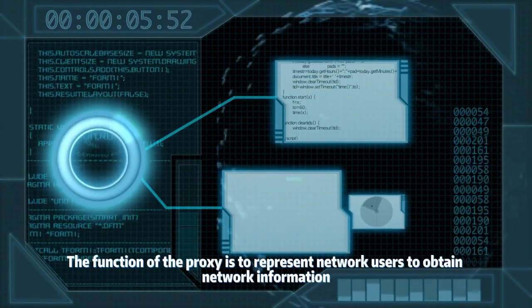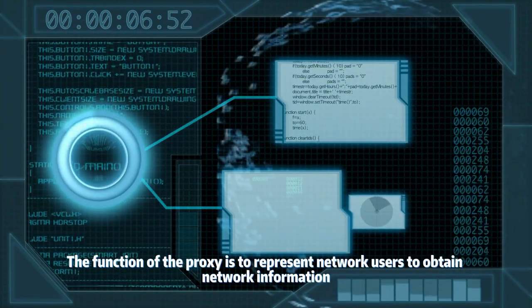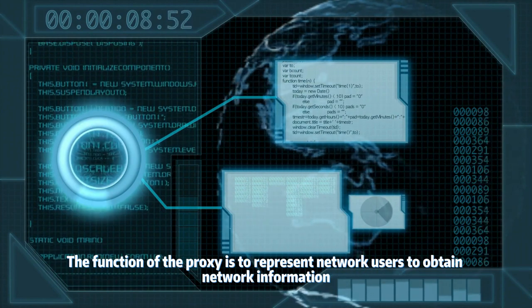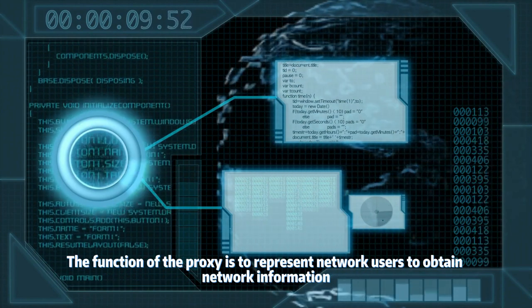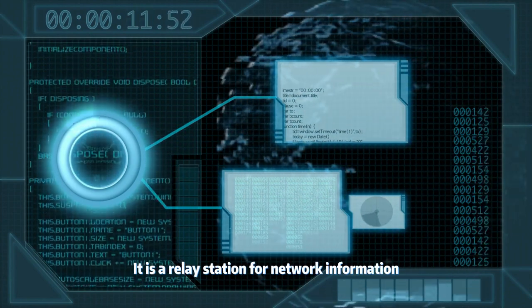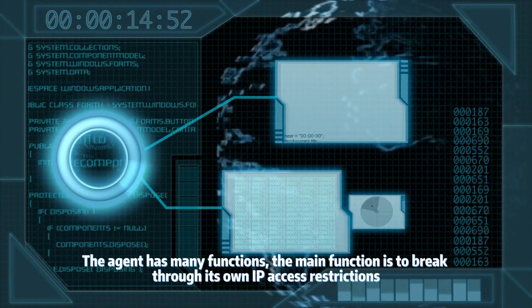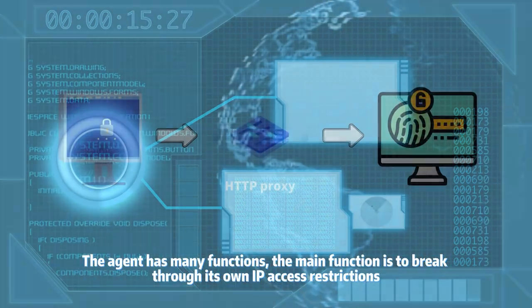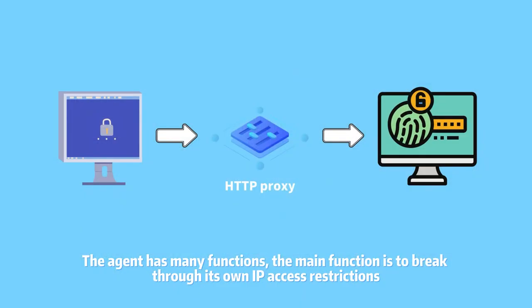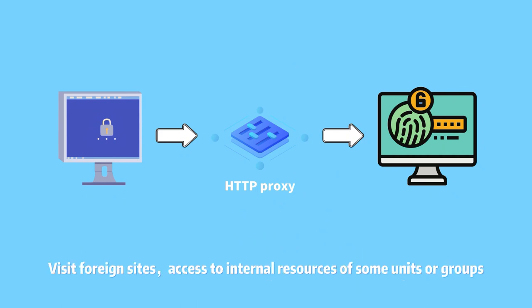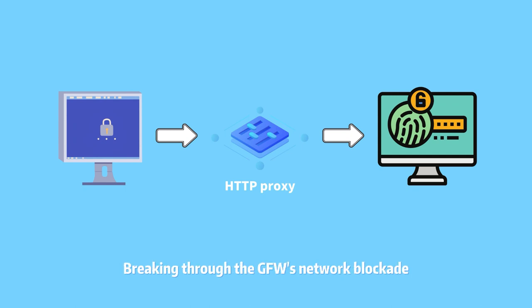The function of the proxy is to represent network users to obtain network information. It is a relay station for network information. The main functions include breaking through IP access restrictions, accessing foreign sites, accessing internal resources of some units or groups, and breaking through the GFW's network blockade.